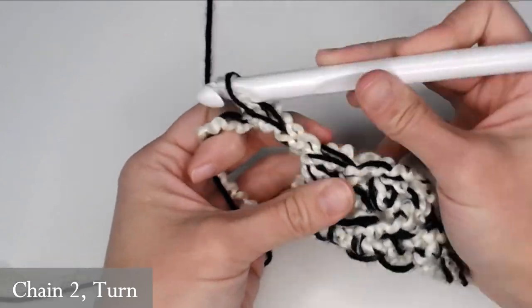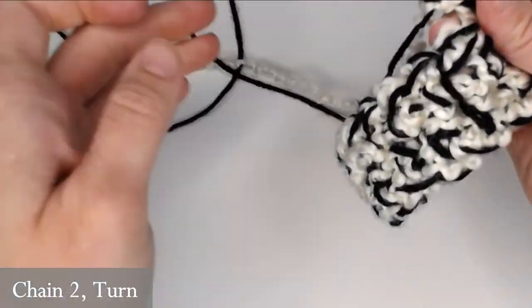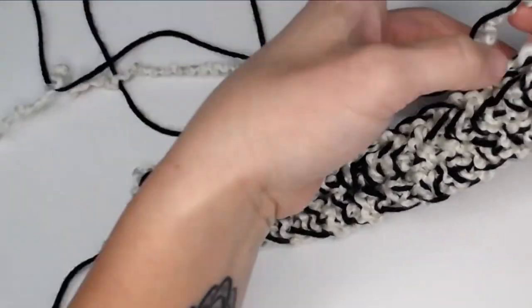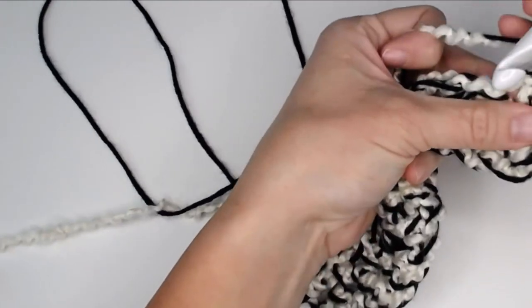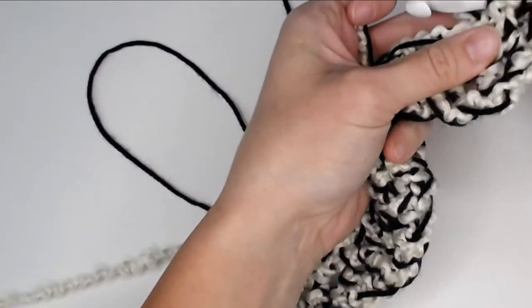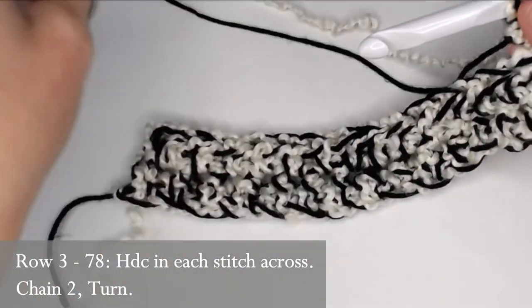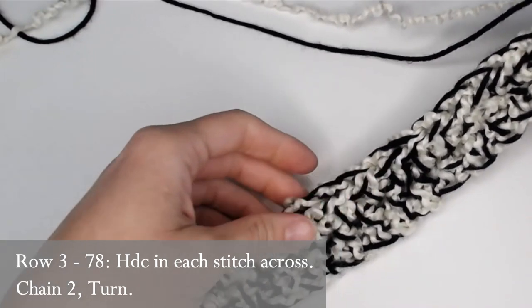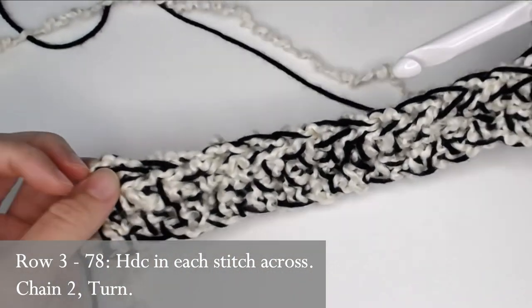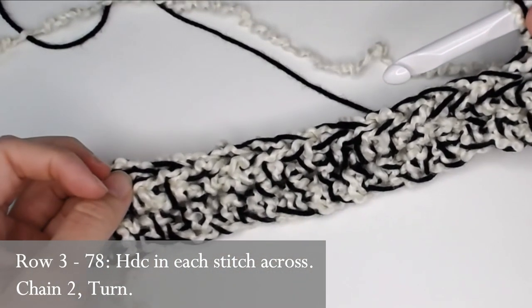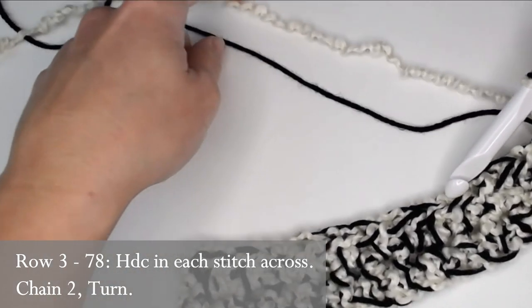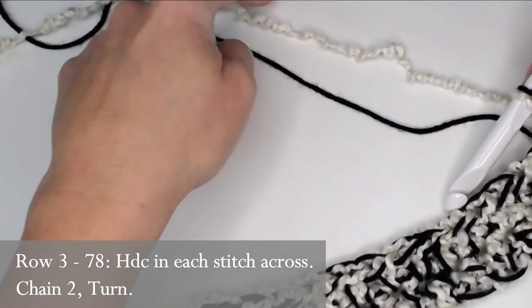We will chain two, one, two, turn our work. All right, and we will continue to put one half double crochet in each stitch all the way across. And that is all you do, guys. You just continue to put one half double crochet in each stitch all the way across your row. Your row should contain 15 stitches. You will continue until you reach the end of row 78.